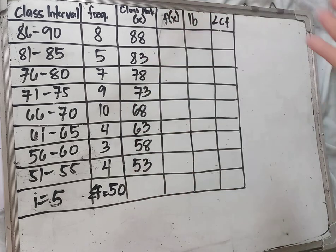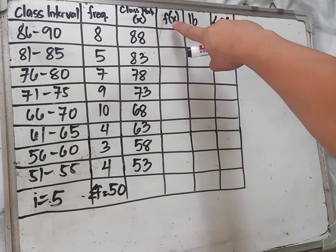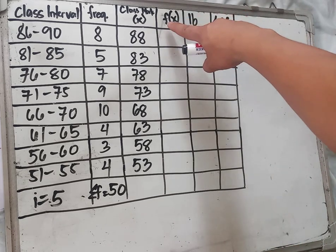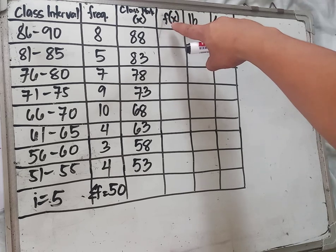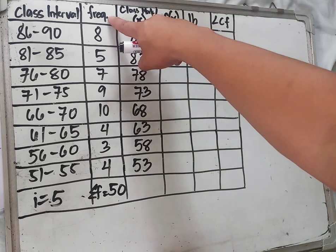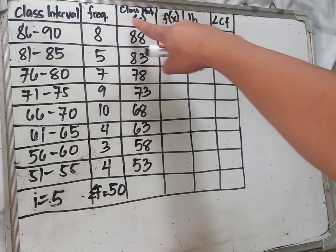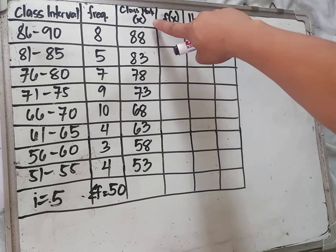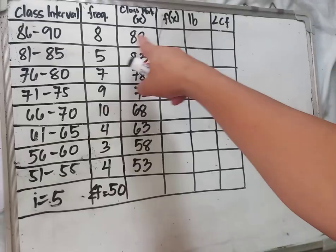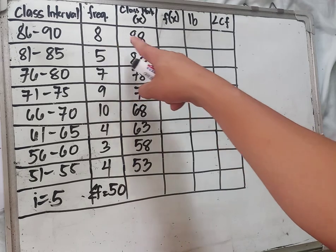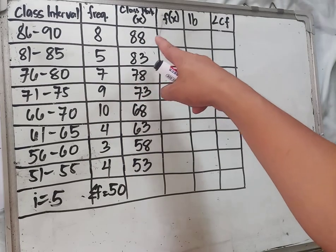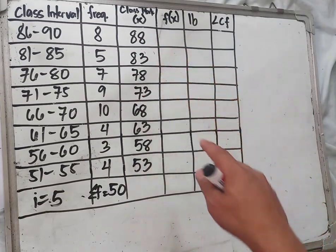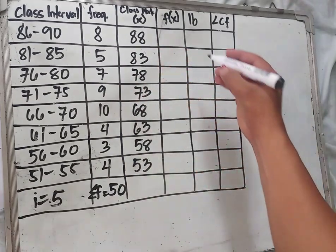Now we complete the frequency distribution table by finding the value of fx, which is frequency times class mark. So we multiply: 8 times 88 equals 704.